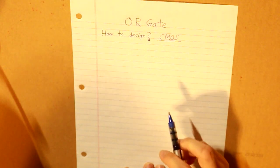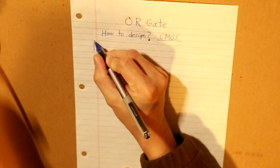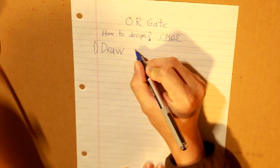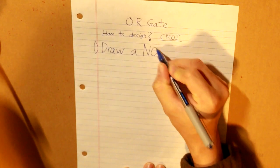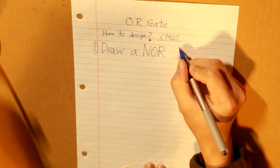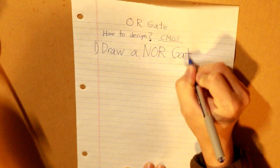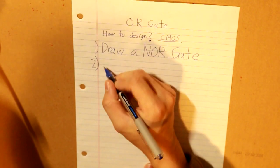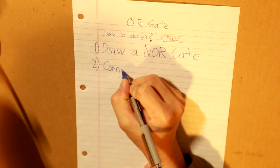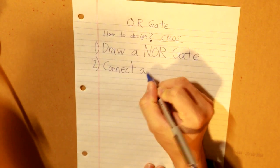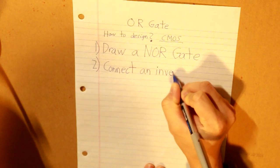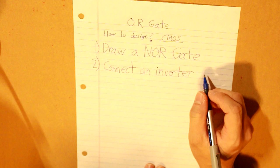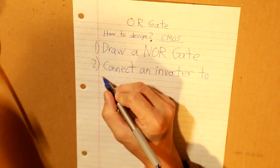So first, what we need to do is we need to draw a NOR gate. And then the second step is to connect an inverter to that NOR gate.